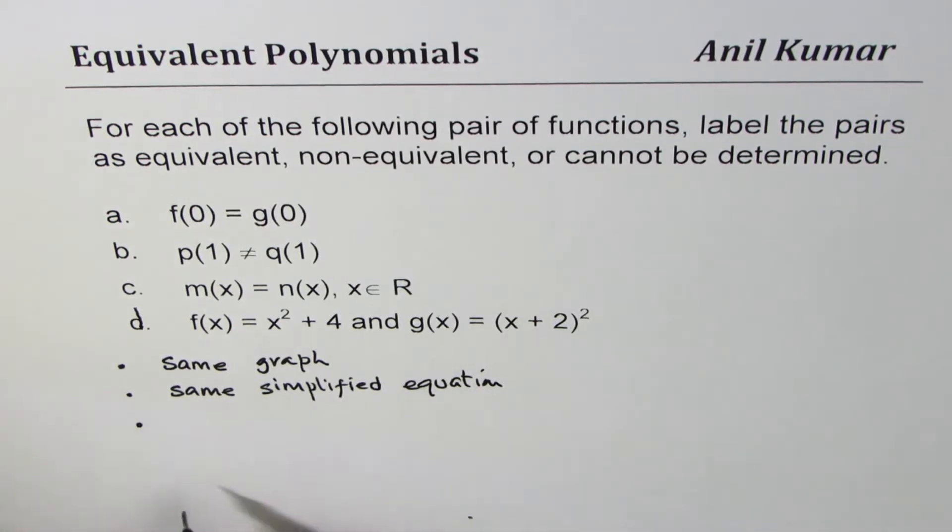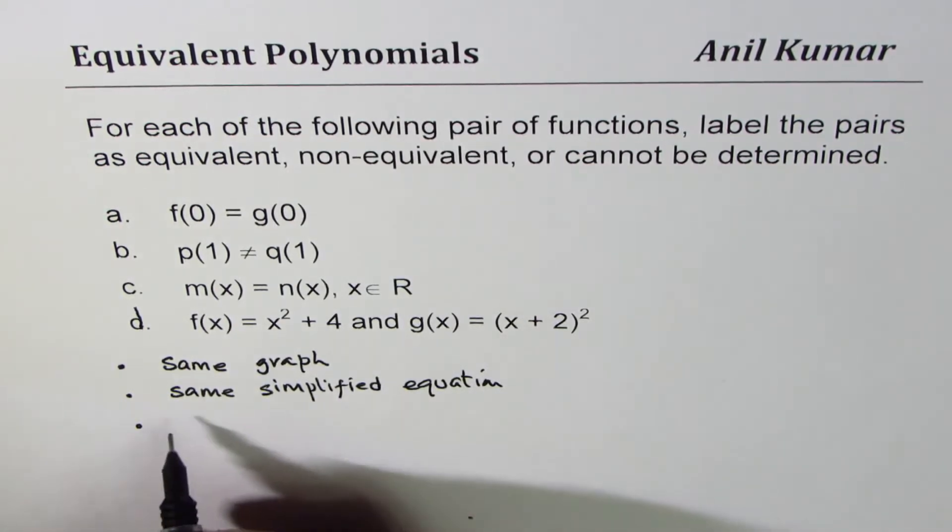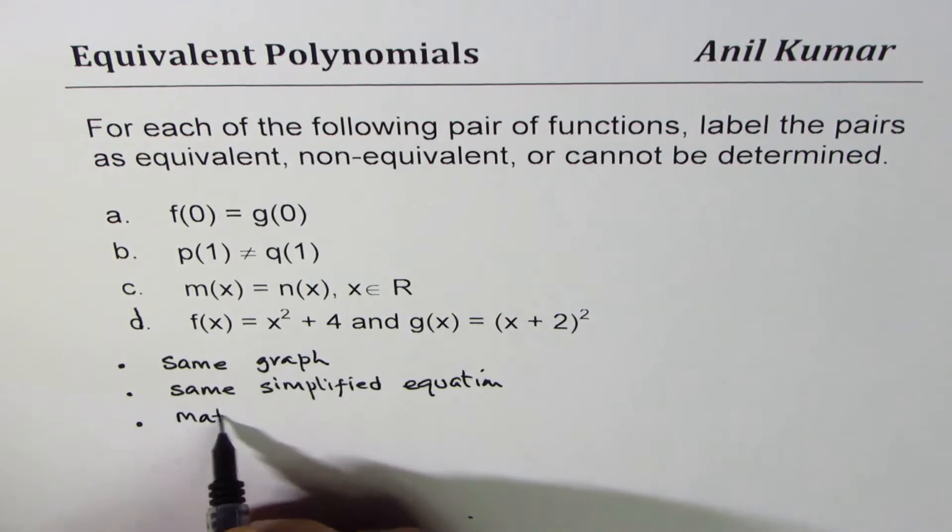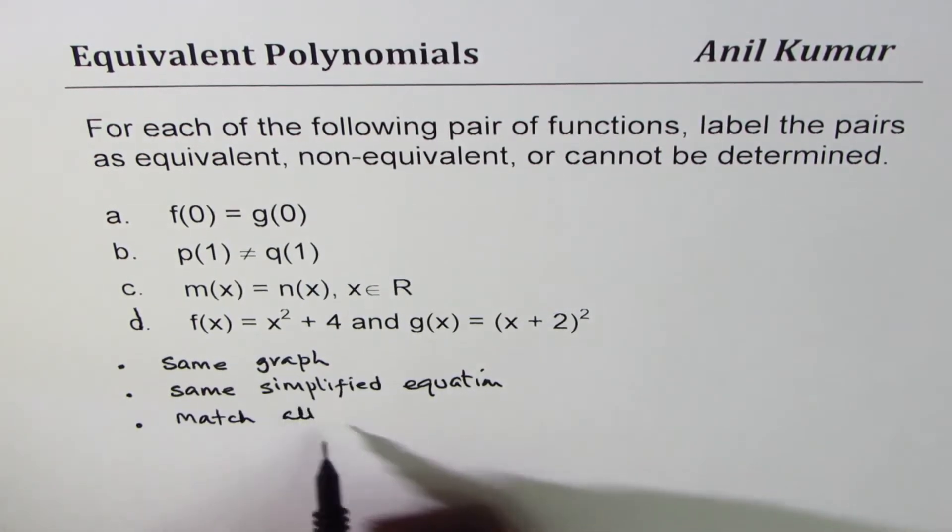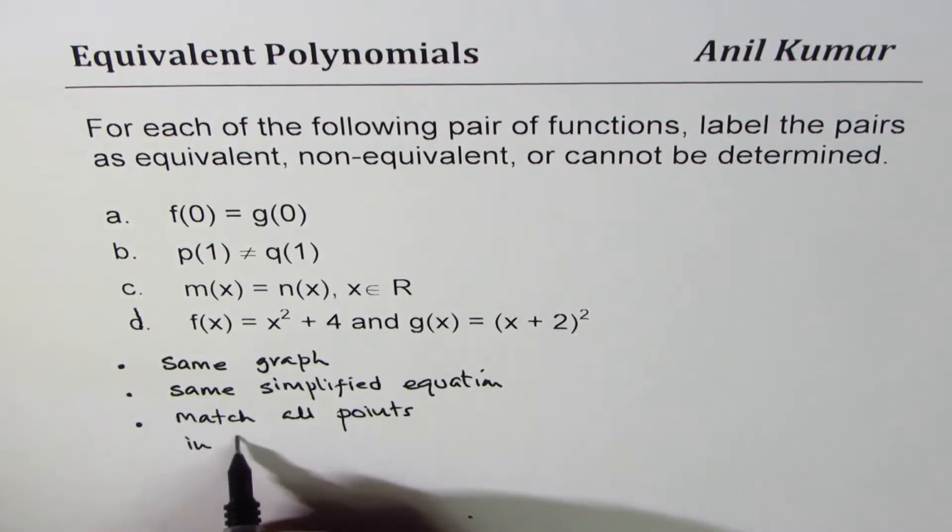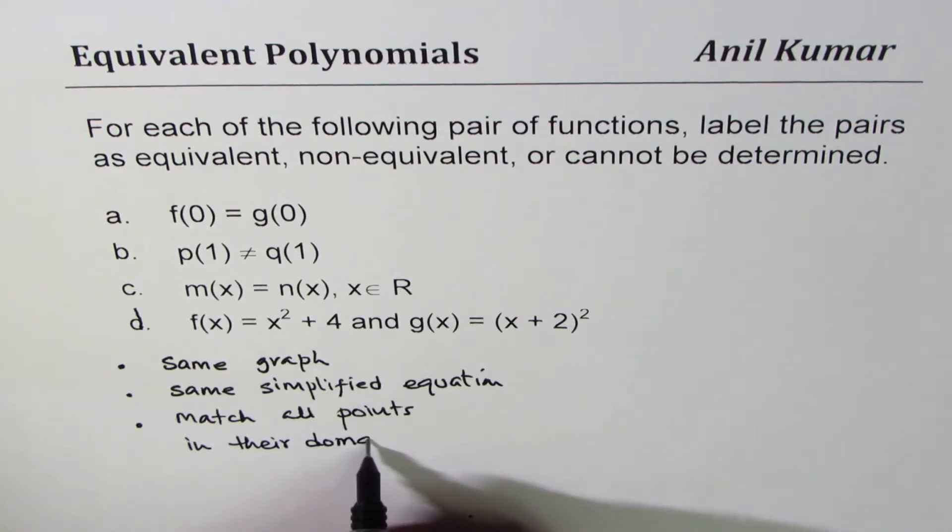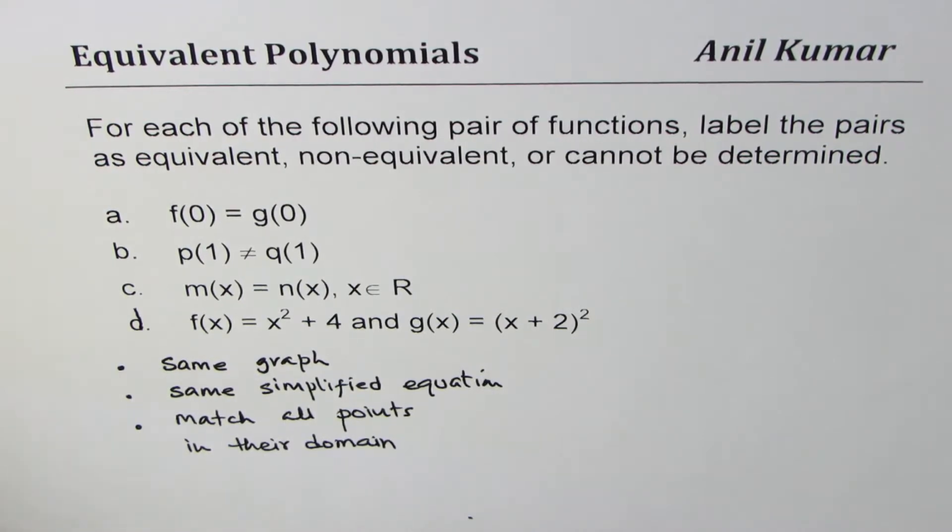Or what else? Or we could just match all points in their domain. Even if one point is different, then the functions are not equivalent. That's the whole idea. So these are three ways to figure out whether the given polynomials are—it works for any function for that matter—are equivalent or not.